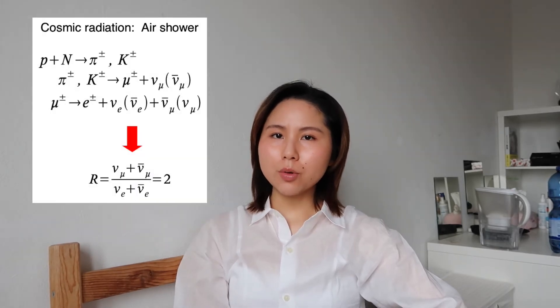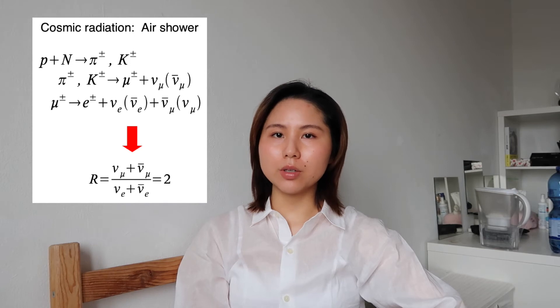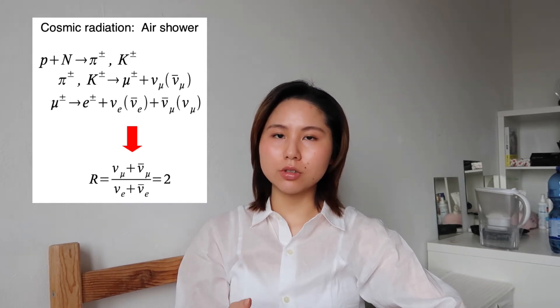The second is the atmospheric neutrino problem. When cosmic rays hit the atmosphere, they will actually produce muon neutrinos and electron neutrinos at a ratio of 2 to 1. However, what we observed is 1 to 1.